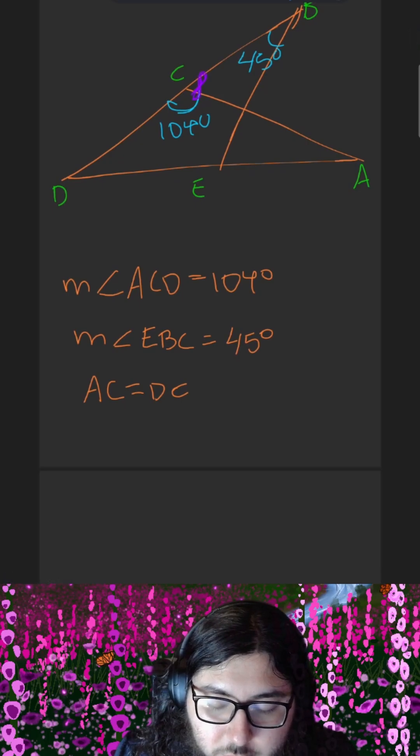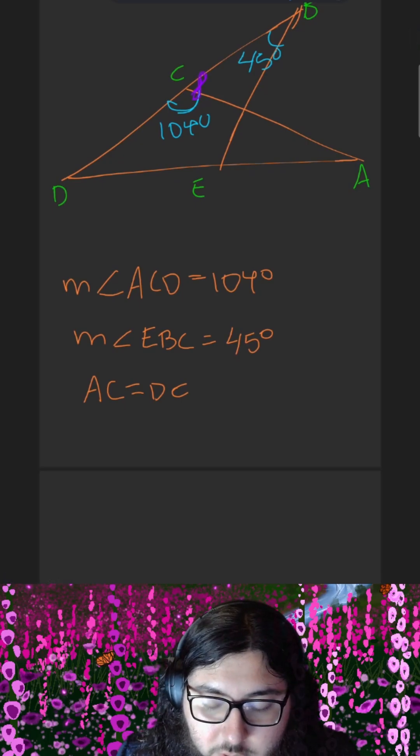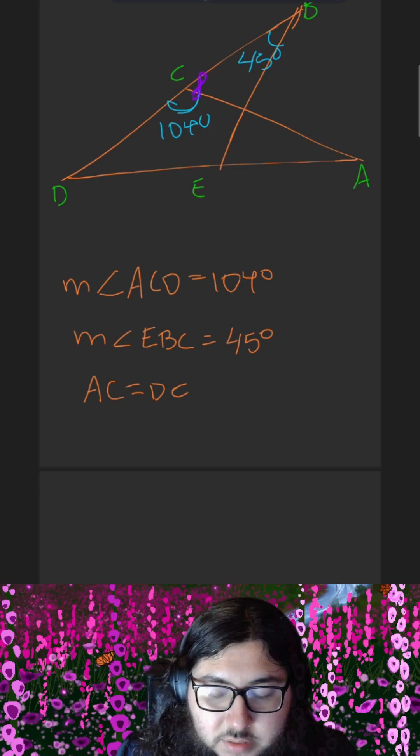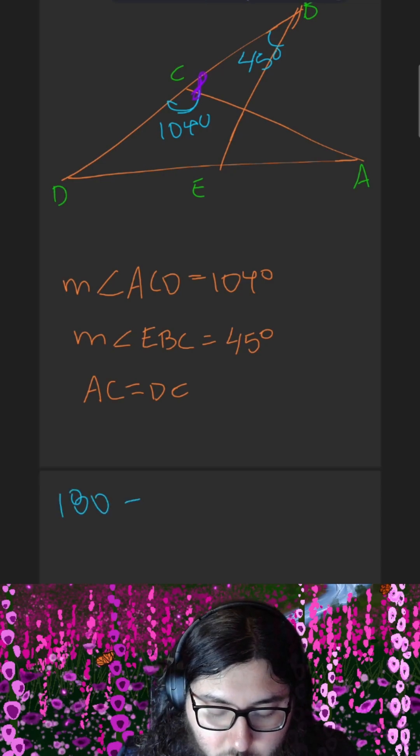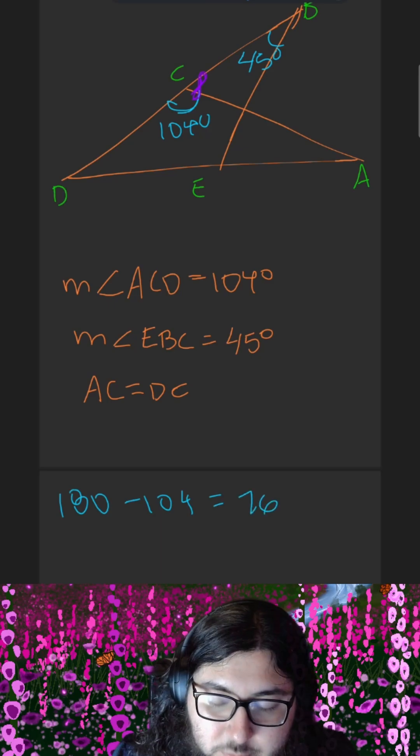Our next step is going to be to calculate this purple angle by the fact that it is supplementary with angle ACD. What that means is that these angles add up to 180 degrees. So 180 minus 104 gives us 76. So this purple angle is 76 degrees.